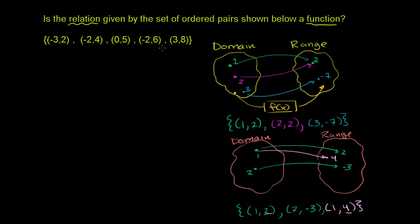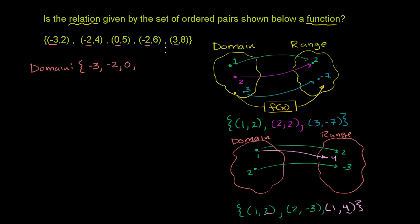Now with that out of the way, let's tackle the actual problem. Let's think about its domain and its range. The domain — the possible x-values or inputs into this relation — includes negative 3, negative 2, 0, and positive 3. Those are the possible values that this relation is defined for, that you could input and figure out what it outputs.